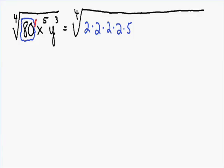Now let's move on to our x to the fifth term. X to the fifth is just x multiplied by itself five times. So we have one, two, three, four, five x's.